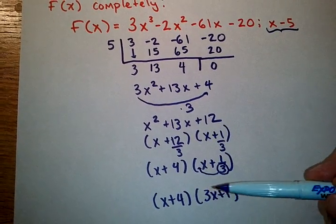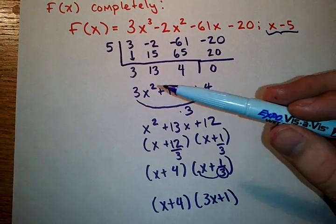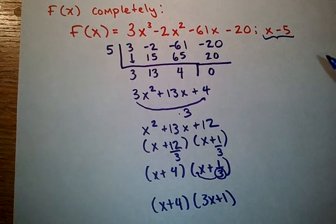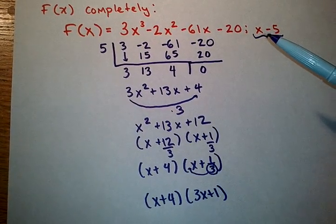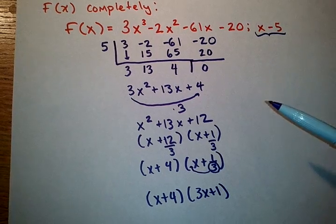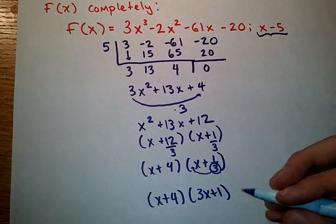Now, these two factors come from this polynomial, the answer, but there's one more that I have to write to complete my answer. I'm going to take this x minus 5 and bring it all the way down to the bottom.